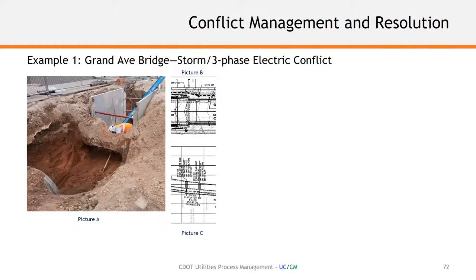We had a reinforced concrete pipe planned to run through there at about a one and a half percent grade. We had collected SUE information during the pre-construction phase during the zero to 30 percent design, and then had it in our 30 to 90 percent conflict analysis. We knew it was there, we had analyzed it, and we had elevations on the top of the utility. However, we did not know how thick that concrete encasement was.